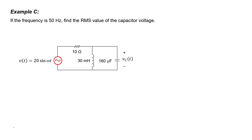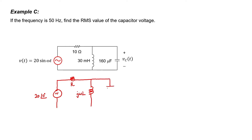In example C, we're tasked with finding the RMS value of the capacitor voltage. The RMS value can be thought of as an average for sine waves — since the true average of a sine wave is zero, we use RMS because it determines the amount of power ultimately delivered. Let's redraw the circuit in terms of impedances. Whether the source says cosine or sine, we can use zero degrees as the phase reference as long as we're consistent when converting back to the time domain.